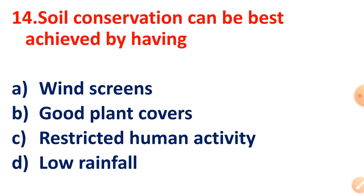Question 14: Soil conservation can be best achieved by having what? The right answer is Option B, Good plant cover.